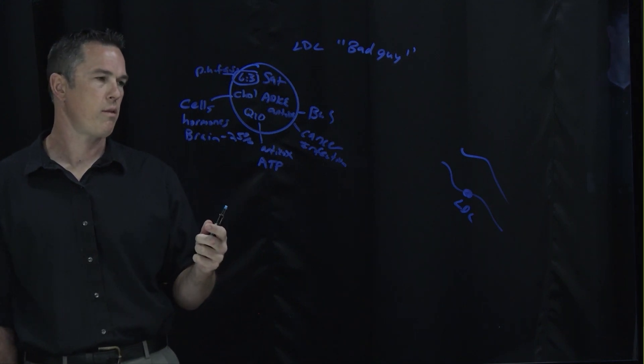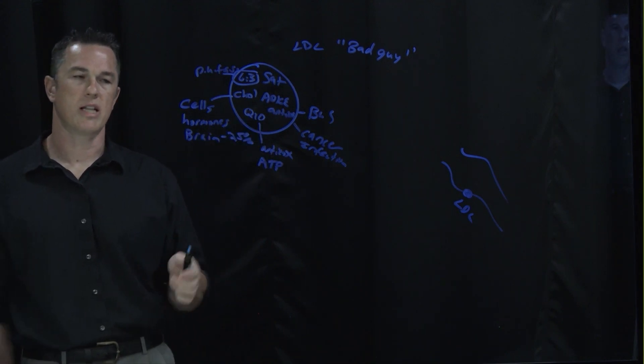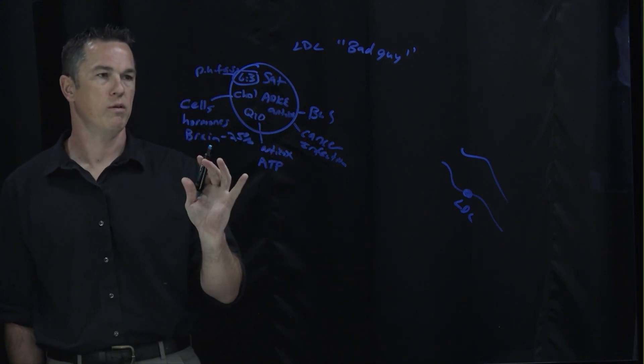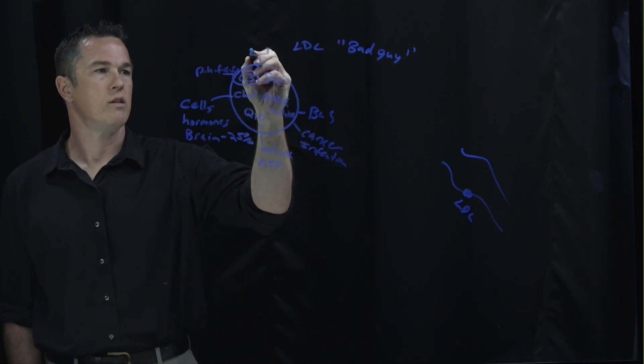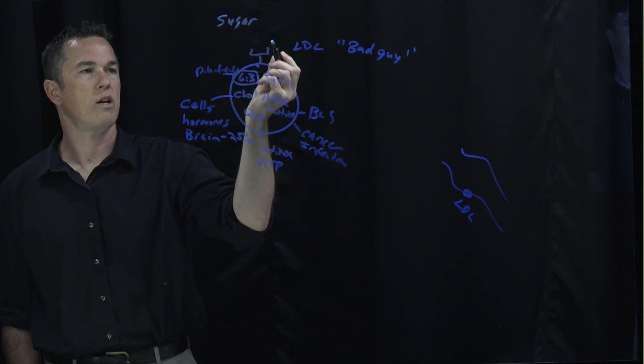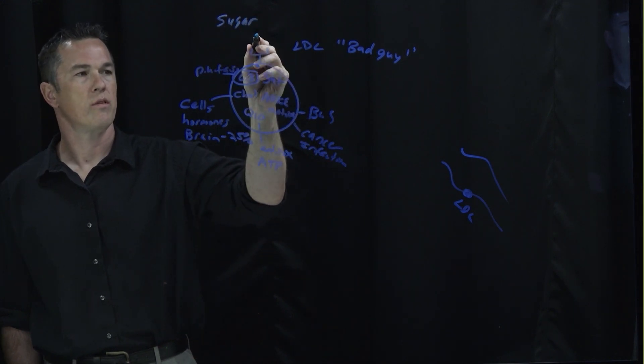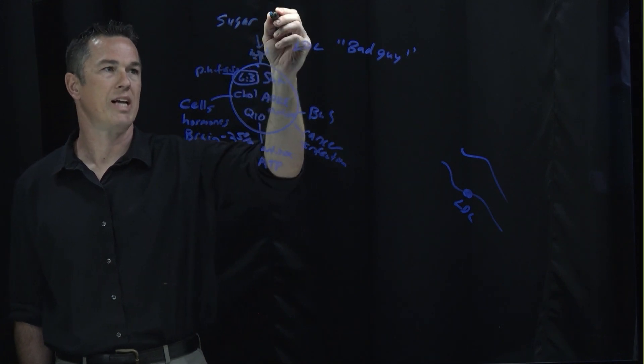But if you fast forward to today, there's been a lot more research and a lot more knowledge about really what's going on. The first thing to understand is there's a receptor on here, and when you eat sugar or you have chronically high blood sugars, it's going to bind to that receptor and make it sticky and damage it. It's called glycosylation.